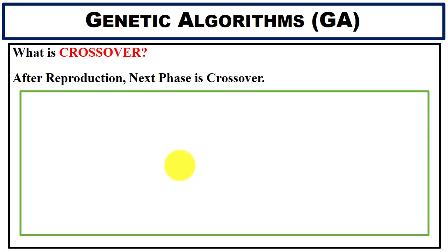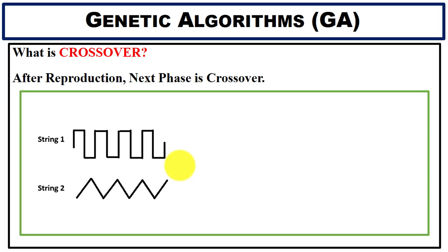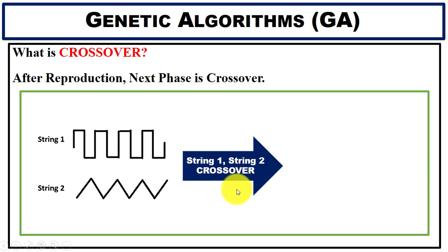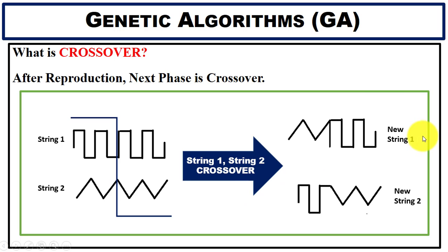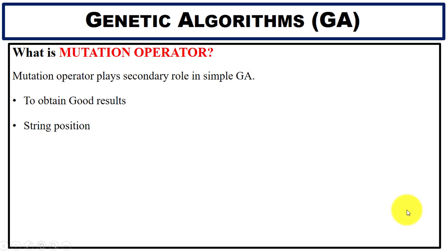After reproduction, the next step is crossover. Suppose we have two strings — string one and string two. We apply the crossover operator and after crossover we get new string one and new string two. You can see the changes in the strings after the crossover operation.